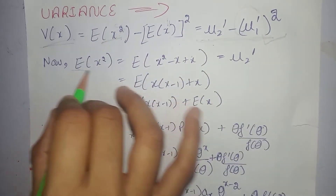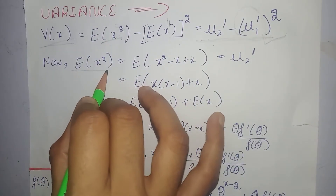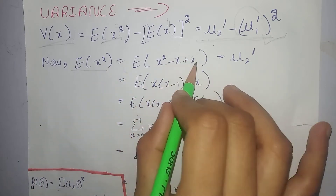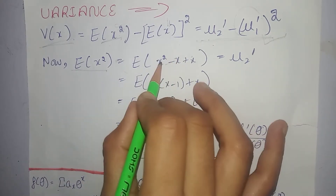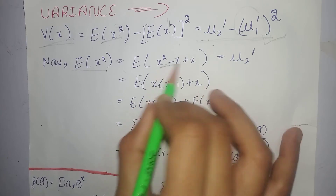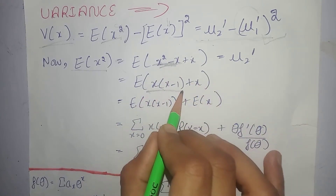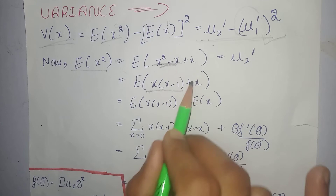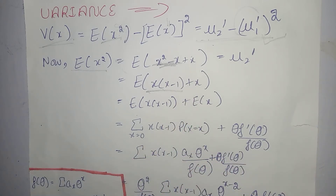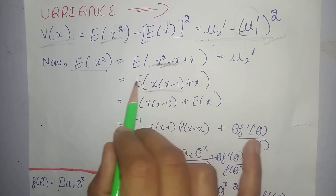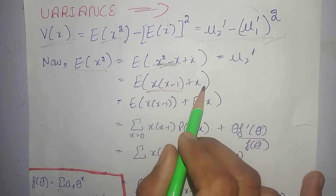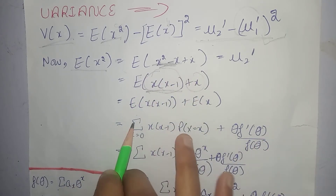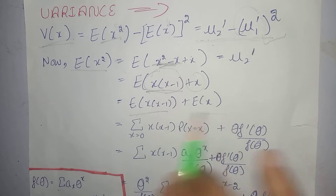So now expectation of x raised to power 2. Isko agar hum simplify karein, andar hum minus x plus x kar denge — that is, x² = x(x-1) + x. Dono mein se x common nikala in dono terms mein se. Hum ne paas yeh aajayega. Now, joh haara x hai, woh independent random variable hai. That means hum iski expectation ko alag-alag kar sakte hain — ek baar iski expectation, plus ek baar iski expectation. Hum ne paas overall yeh aagaya.